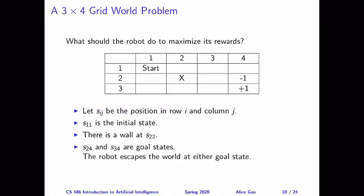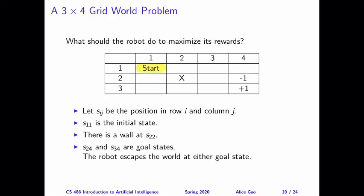This is a reminder of what our grid world looks like. There are three rows and four columns. The robot starts from the top left-hand side corner, and there are two goal states, minus one reward for S24 and plus one reward for S34. There's a cost of exploring this world. If the robot reaches any non-goal state, it gets a small negative reward of minus 0.04. This is to discourage the robot to stay in this world forever.